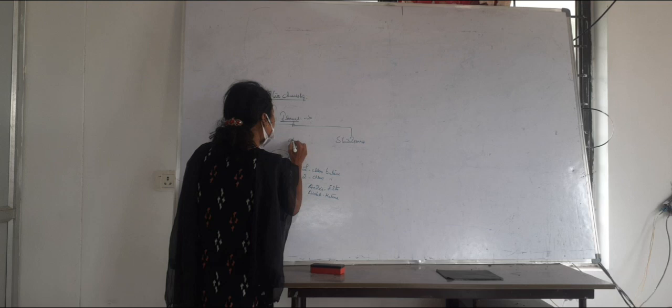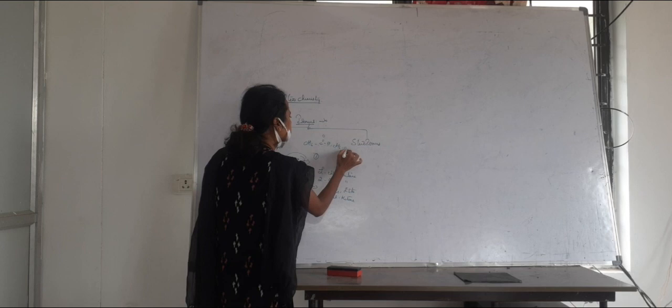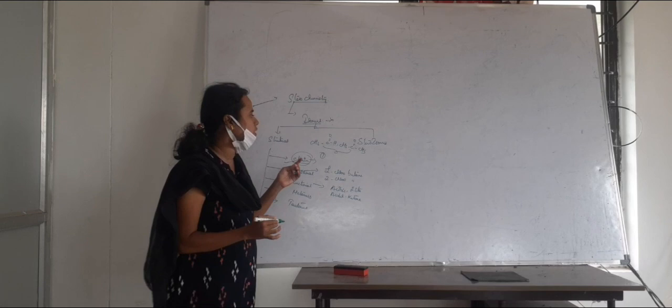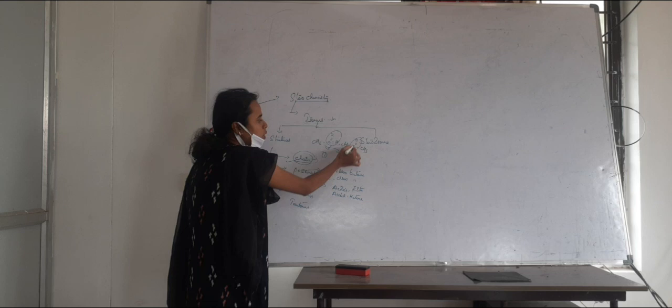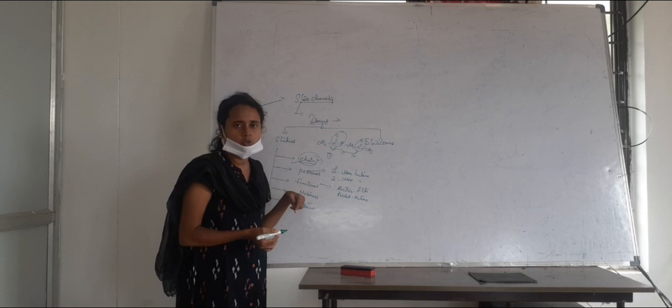For example, acetaldehyde (CH3CHO) and acetone (CH3COCH3) have the same molecular formula C2H4O but differ in the functional group. The aldehyde group is present in acetaldehyde, while a ketone group is present in acetone. This is the main difference in functional group isomers.